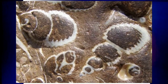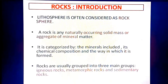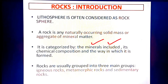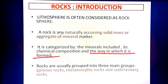Rocks often have organic matter in them. So, according to which category do we divide the rocks? Rocks are of different types, so what is the basis to categorize them? The basis is the minerals included, the chemical composition, and the way in which it is formed. These are the aspects according to which we categorize rocks into different categories.